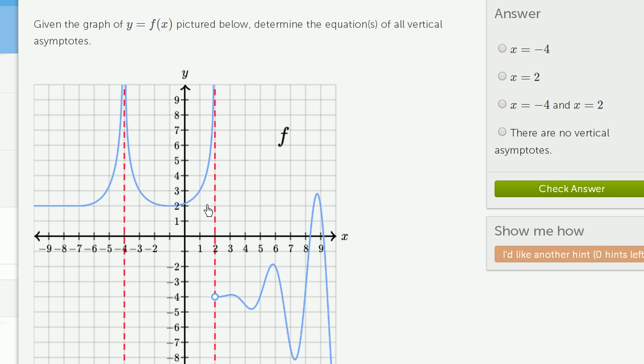But just having a one-sided limit that is unbounded is enough to think about this as a vertical asymptote. The function is not defined right over here, and as we approach it from just one side, we are becoming unbounded.